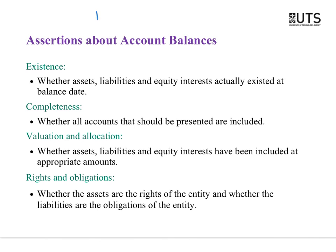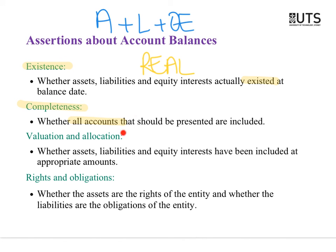Now for balances — assets, liabilities, and owner's equity. Existence: did they actually exist, are they real? Is a chair on an asset register really somewhere physically? Completeness: have we recorded all of our assets and all of our liabilities? Centro shopping centres tried to forget some debt — that didn't work out. Valuation and allocation: valuation is about dollars, but it's usually a more complex calculation than a simple sale. For example, property, plant and equipment involves more than just the purchase price — installation, delivery fees, testing fees, even building a new building for a machine, plus annual depreciation calculations.